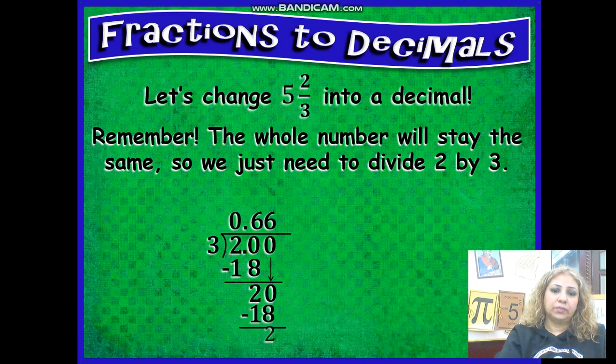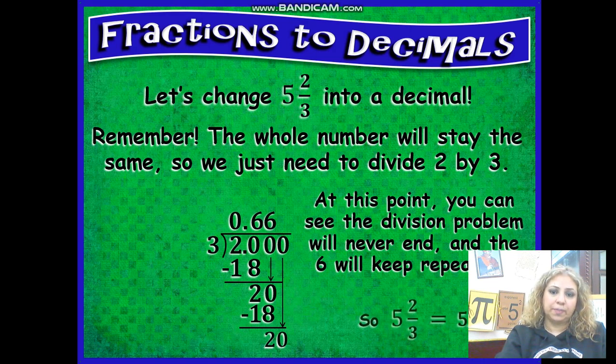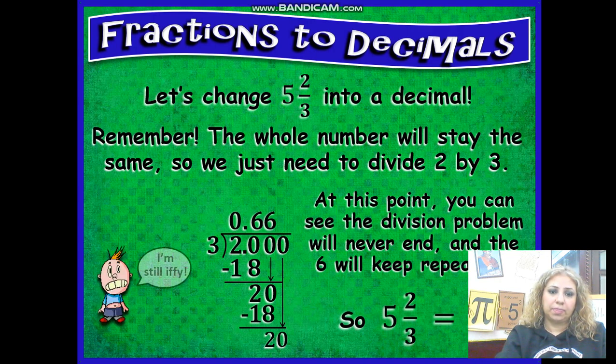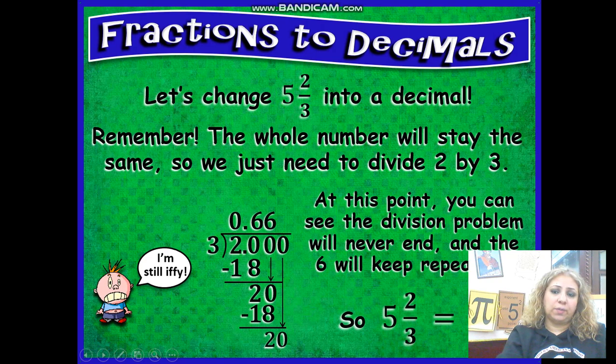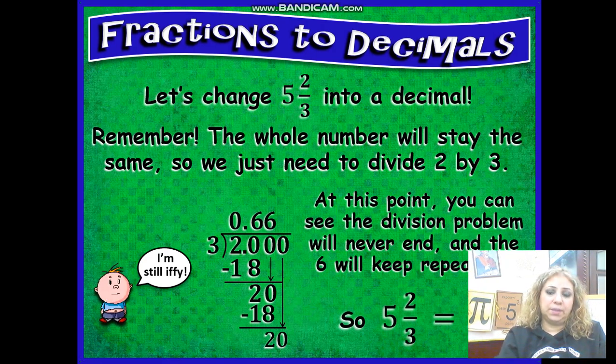Twenty divided by three is six also. Multiply. It will keep repeating. At this point you can see the division problem will never end and the six will keep repeating of course. So I will just keep it as is. Five and two thirds is equal to five point six. I can put a line on top of the six and this line tells me that the six is repeating.